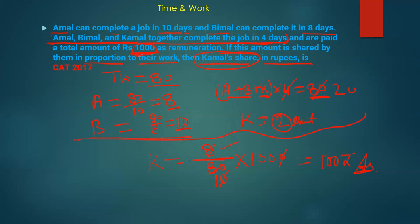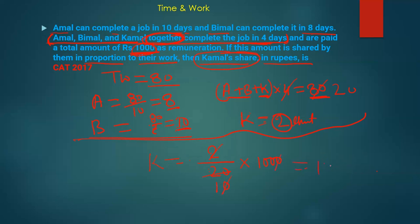We can also solve this differently. When all persons are working together and complete the work together, wages can be divided directly in the ratio of their efficiencies, without separately calculating how many units each person did. So using efficiency ratio: Kamal's share = 2 divided by 20 into 1000 = 100 rupees. Same answer.